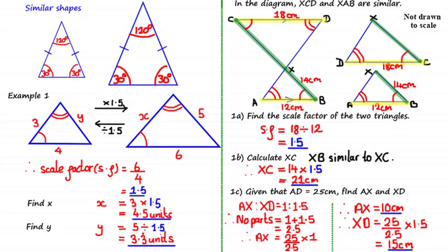To find XD, we divide 25 by 2.5 to get the value of one part and then multiply by 1.5, as XD represents 1.5 parts of the line AD. Evaluating this gives XD equals 15 centimeters. So it's useful to know how the scale factor works as a multiplier, but it's also useful to know how it works as a ratio. I hope that was useful — do join us in the next tutorial where we'll be looking at more involving problems. Until then, keep up the good work and I'll see you soon.